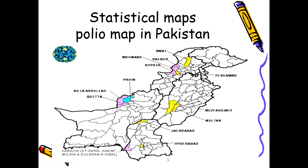We also have statistical maps, where a map shows the prevalence of a disease — for example, polio in Pakistan. Certain areas with high prevalence are color-coded: red indicates increasing cases, yellow indicates decreasing cases, and blue indicates static numbers. These spot maps visually indicate the geographic distribution and prevalence of disease.